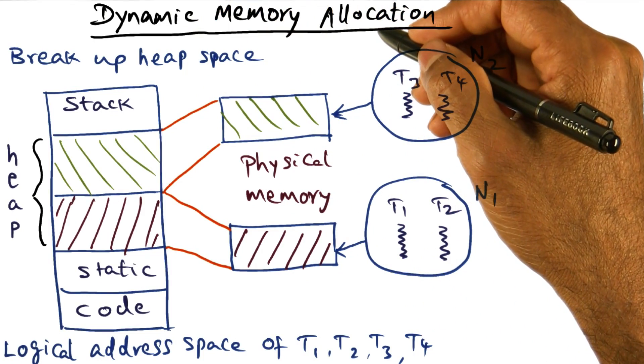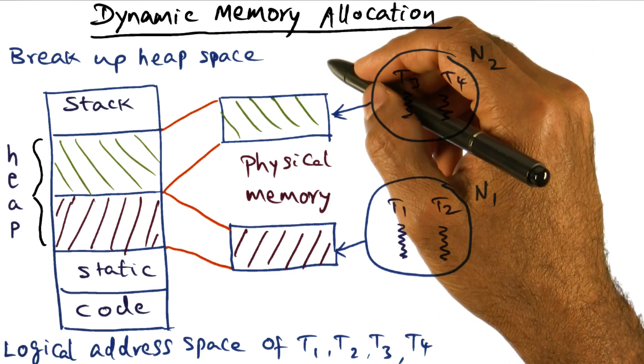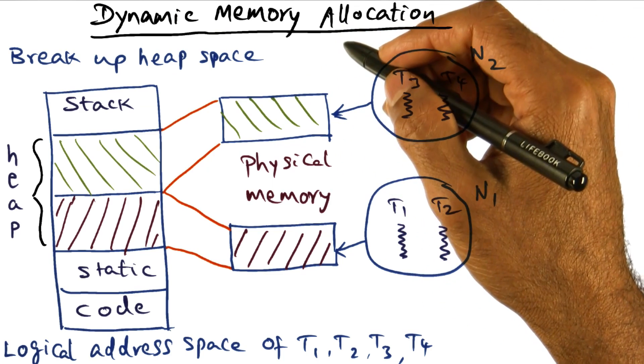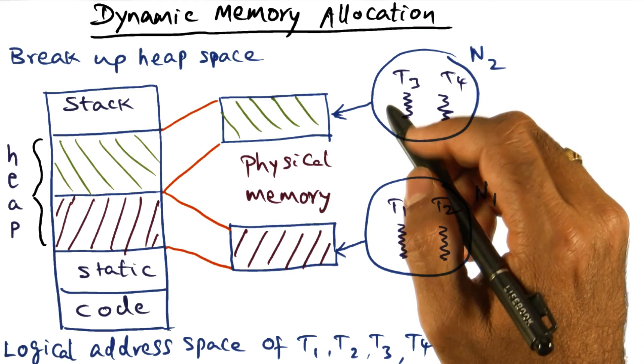Dynamic memory allocation is another important service that is part of memory management. It's important once again to make sure that memory allocation scales with the size of the system.